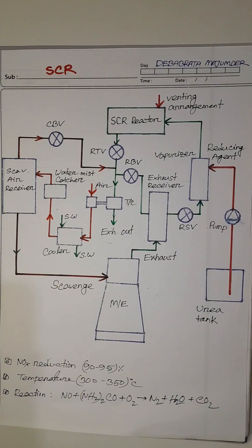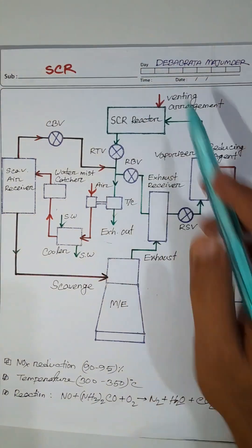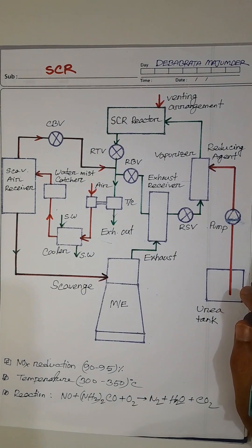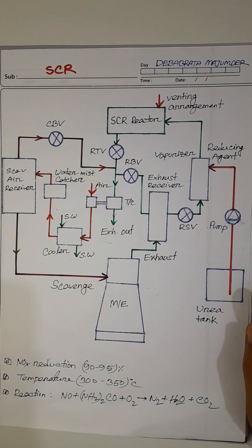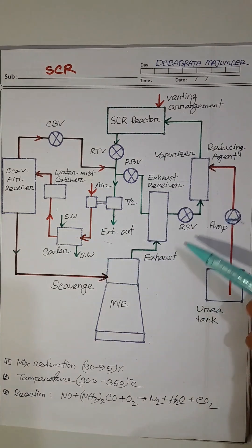This is the Selective Catalytic Reactor diagram. In short, it is SCR. This system is used for the NOx Reduction System. First of all, we need to familiarize with the diagram.